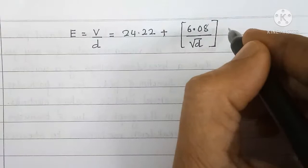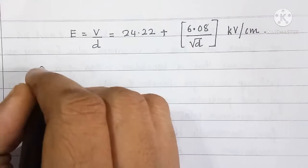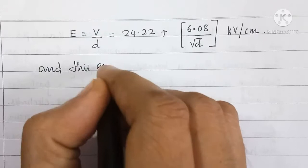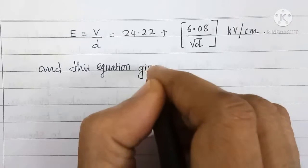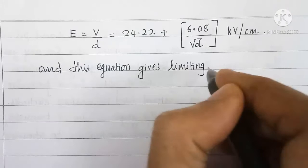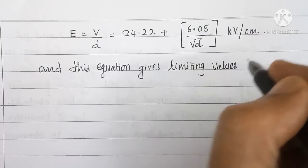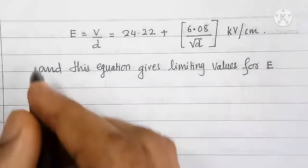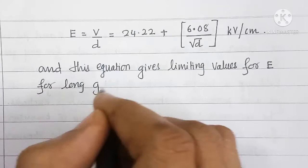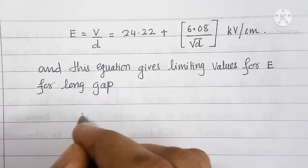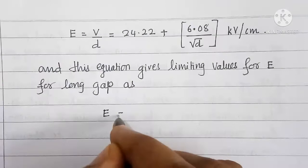And this equation gives limiting values for electric field E. For long gap, as long gap means D value is practically very large, V by D is equal to 24 kilovolt per centimeter.